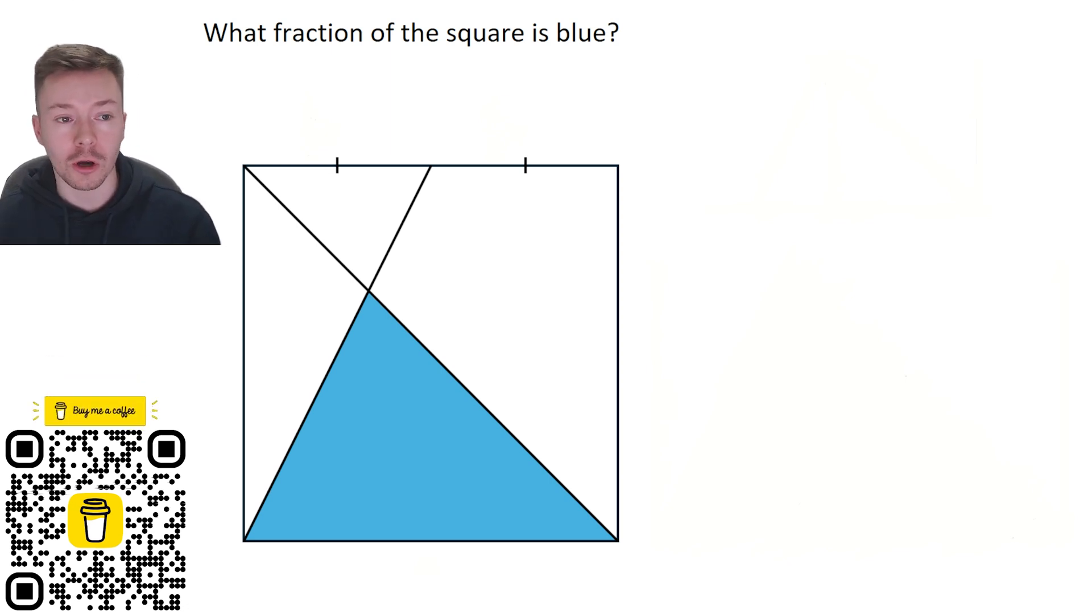So you'll want to start off by labeling the sides, and because we're looking at fractions of the total, it actually doesn't matter what we label the sides here. So what I've gone with is labeling the sides of the square as x, and so that means the top half of the square becomes a half x and a half x.